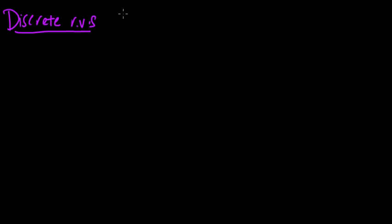Recall that a discrete random variable X is called discrete if its image, if the image of the space omega is countable. You remember that from the previous video, if you watched the previous video.